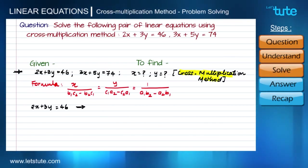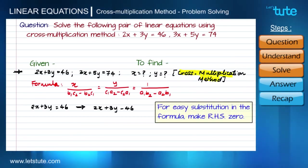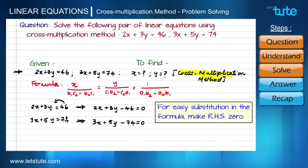Let us start with the first equation. We can write this equation as 2x + 3y - 46 = 0. We brought 46 to the left hand side, it became negative 46. Second equation we can write as 3x + 5y - 74 = 0. Similarly, this 74 we have brought to the left hand side and it became negative 74.